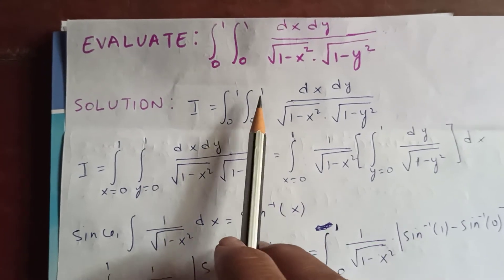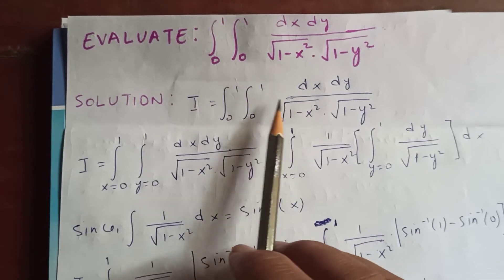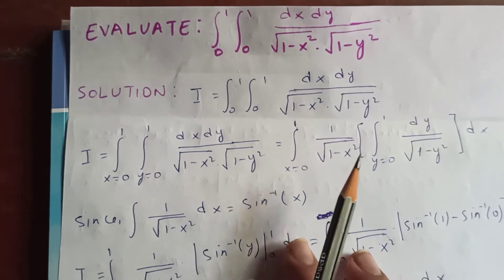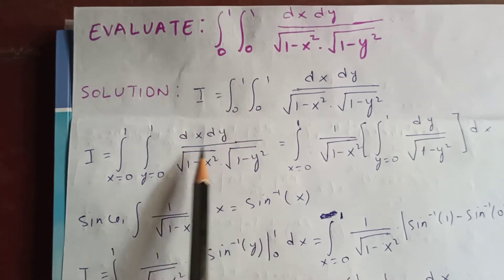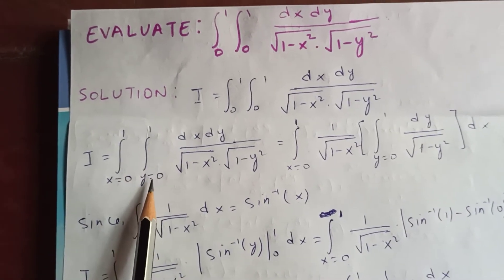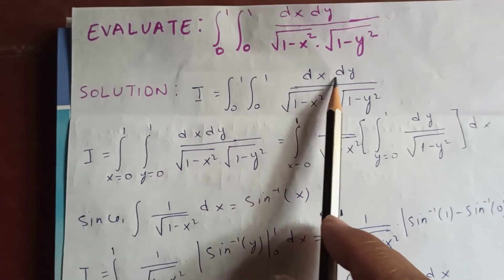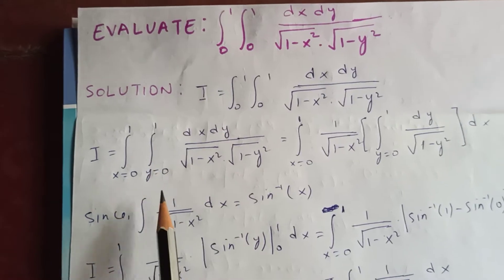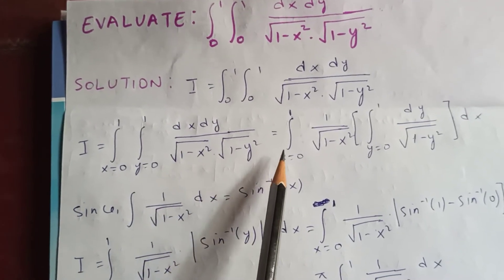So directly you can apply for x and y, but in a double integral we go step by step. Let the first integral be for x, from x equal to 0 to 1, and the second for y, from y equal to 0 to 1. That's why the double integral comes out as dx dy by square root of 1 minus x squared, square root of 1 minus y squared.